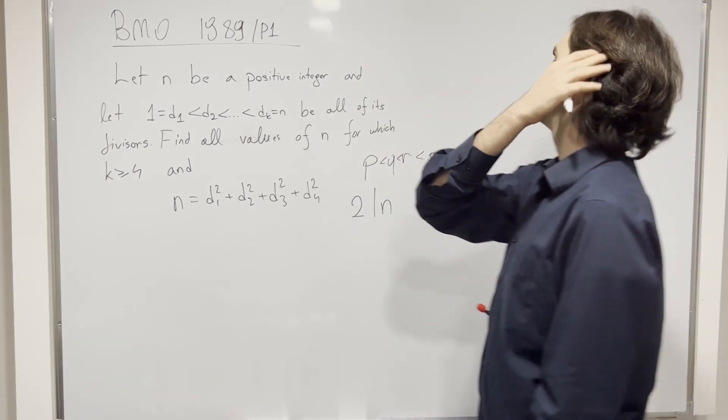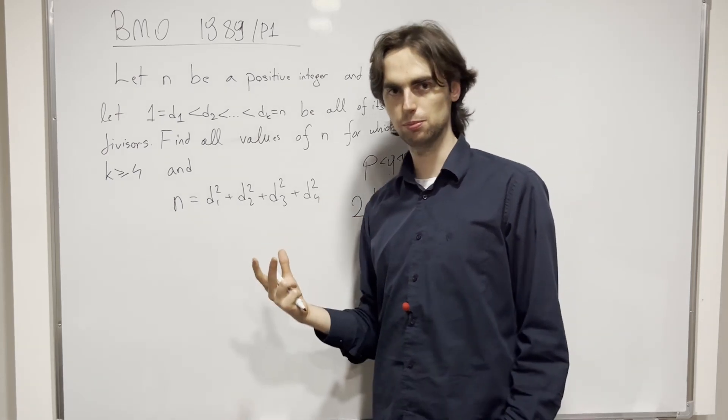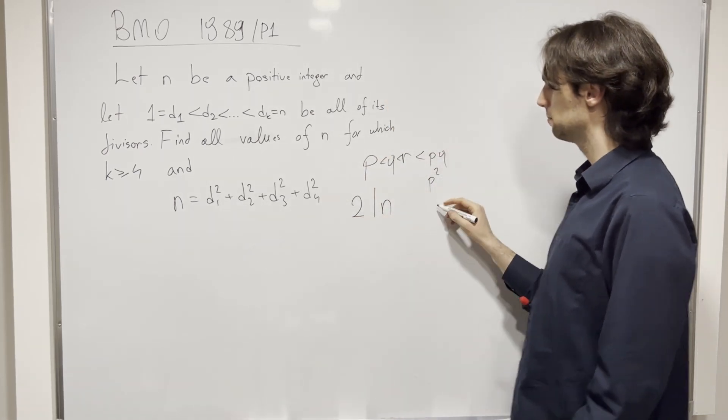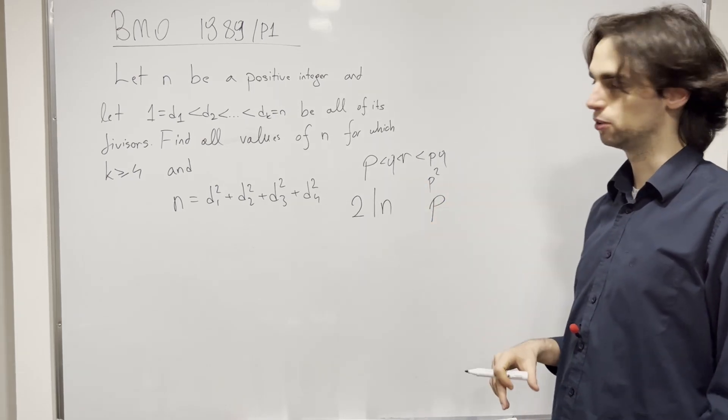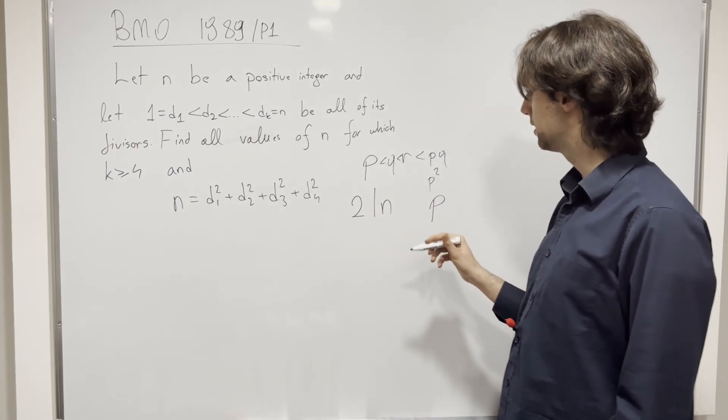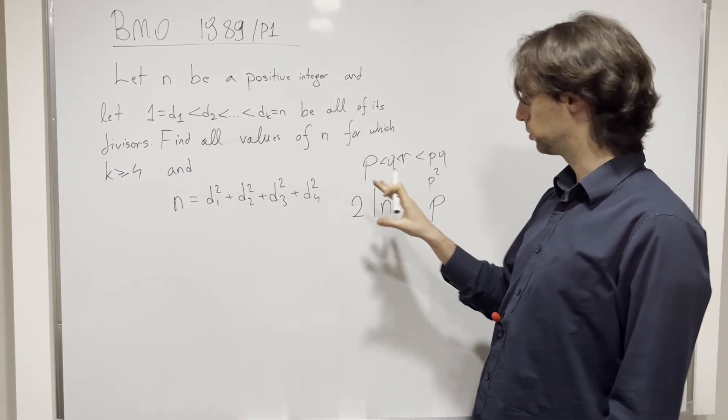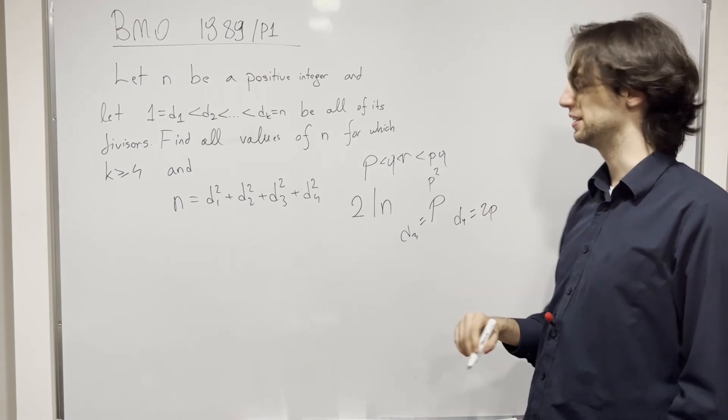And the answer is, well, look at this, so 2 divides n, and we have a couple of possibilities, either there's like, if n has another divisor p, the smallest one after 2, and we either have that the next sort of the divisor, we have d3 is equal to p, and then d4 needs to be equal to 2 times p.